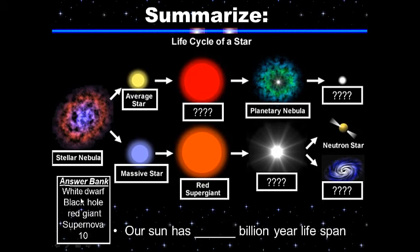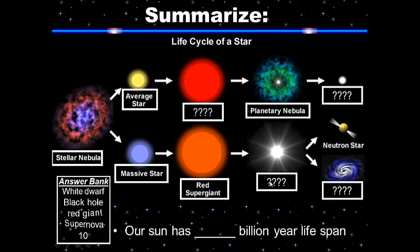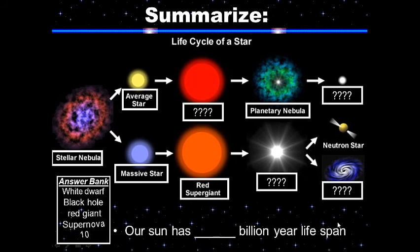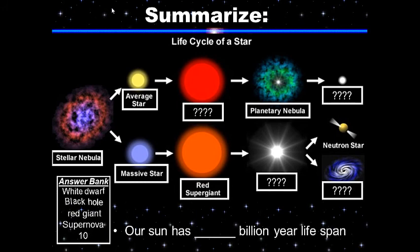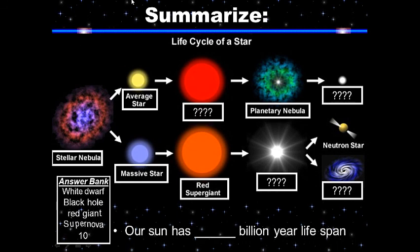For your summary, draw a little flow chart — I'd really like it if you draw pictures along with labels, because pictures will help you remember better. Use your answer bank to determine what goes in the boxes. Our Sun has a blank billion-year-old total lifespan — know this for the test, along with the difference between the life cycle of a yellow star like our Sun and a blue massive star. Go ahead and pause to complete your summary. Thanks for listening — you guys have a good night.